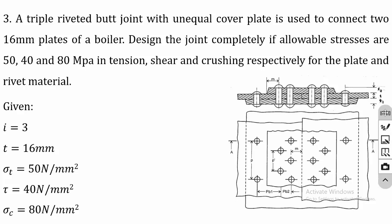In the previous lecture we discussed the design procedure for rivets and solved a problem on design of lap joint. In this lecture we are going to discuss a problem on butt joint. The problem is: a triple riveted butt joint with unequal cover plates is used to connect two 16 mm plates of a boiler.